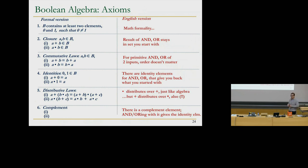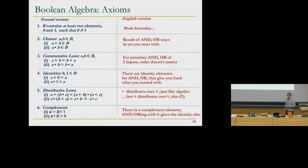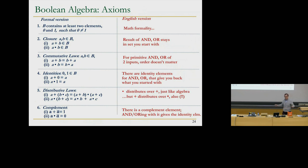Complement: A OR A-bar is one — either A is true or A-bar is true, so A OR A-bar must be true. And A AND A-bar cannot be true at the same time, so the result is zero.